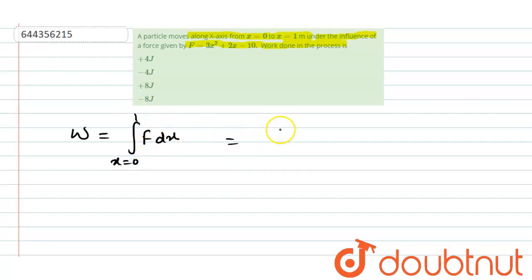We can substitute the value of f in terms of x. That is 3x square plus 2x minus 10 into dx. x varies from 0 to 1.